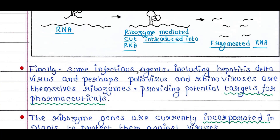Some infectious agents, including hepatitis delta virus and perhaps poliovirus and rhinoviruses, are themselves ribozymes, providing potential targets for pharmaceuticals. We can make drugs to target these ribozymes.